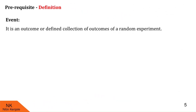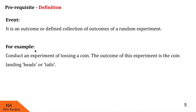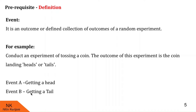The next term is event. An event is an outcome or defined collection of outcomes of a random experiment. For example, in tossing a coin, let A be the event of getting a head and B be the event of getting a tail. Any other event apart from these two is an impossible event in this example — for instance, getting a head and tail in a single toss, which is possible only if the coin is unfair.